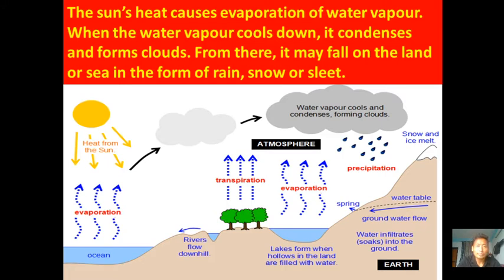The Sun is the main source of heat and light to our Earth. After washing our clothes, we dry them under the Sun, and after seven to eight hours our wet clothes become dry because of the Sun's heat. The Sun's heat causes evaporation — when it touches water bodies such as oceans, rivers, and lakes, these water bodies get warm and evaporation takes place, turning water into vapor or gases.